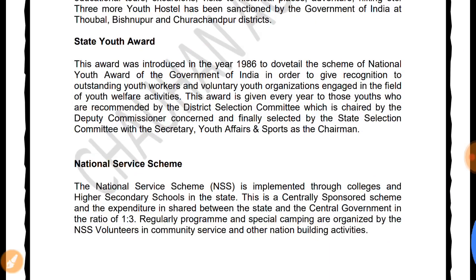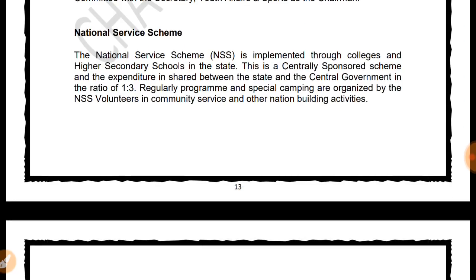Many states provide youth awards. In 1986, the scheme of the National Youth Award was started. District selection committees, chaired by the Deputy Commissioner, make selections which are finally confirmed by the state selection committee with the Secretary of Youth Affairs and Sport. The National Service Scheme is implemented through colleges and higher secondary schools in the state as a centrally sponsored scheme, with expenditure shared between state and central government in a 1:3 ratio.